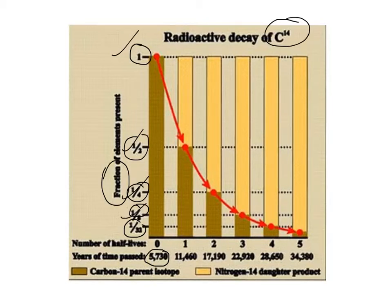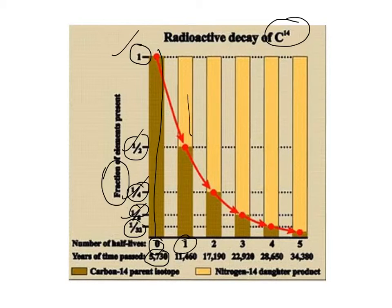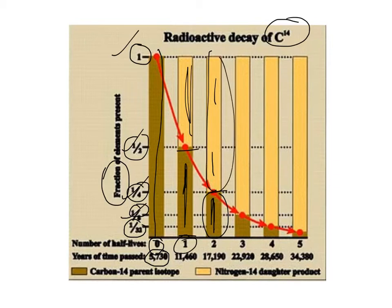Across the bottom on the x-axis, we have no half-lives, meaning that the rock or the bone is brand new and no radioactive decay has occurred at all. This whole section is brown, which represents all parent isotope with no daughter. Then after one half-life, you take all of that parent and you halve it — so you have 50% daughter and 50% parent. Then you take this 50% parent and halve it again, giving you 25% parent and 75% daughter.